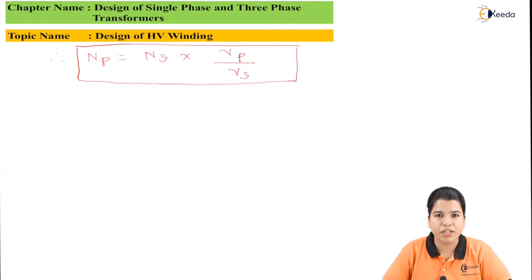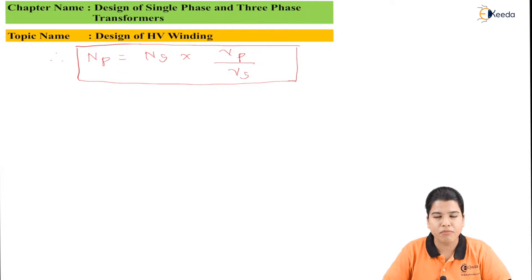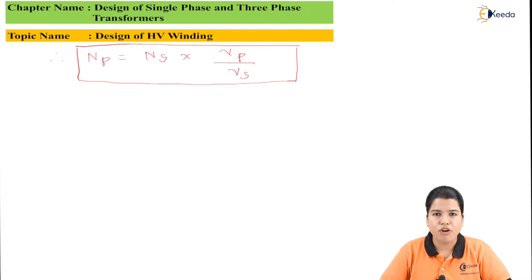When we calculate the turns using this formula we might get a fractional value. This fraction should be rounded up because the number of turns can never be a fractional value. Now let us see what the second step is.